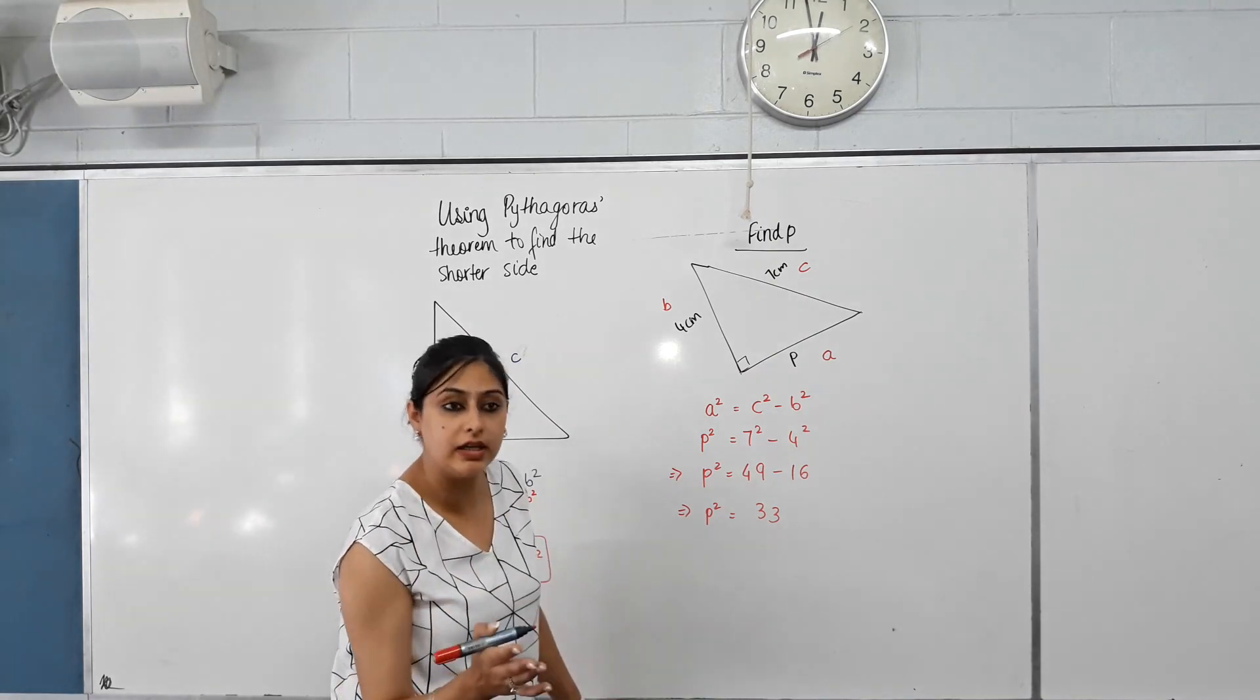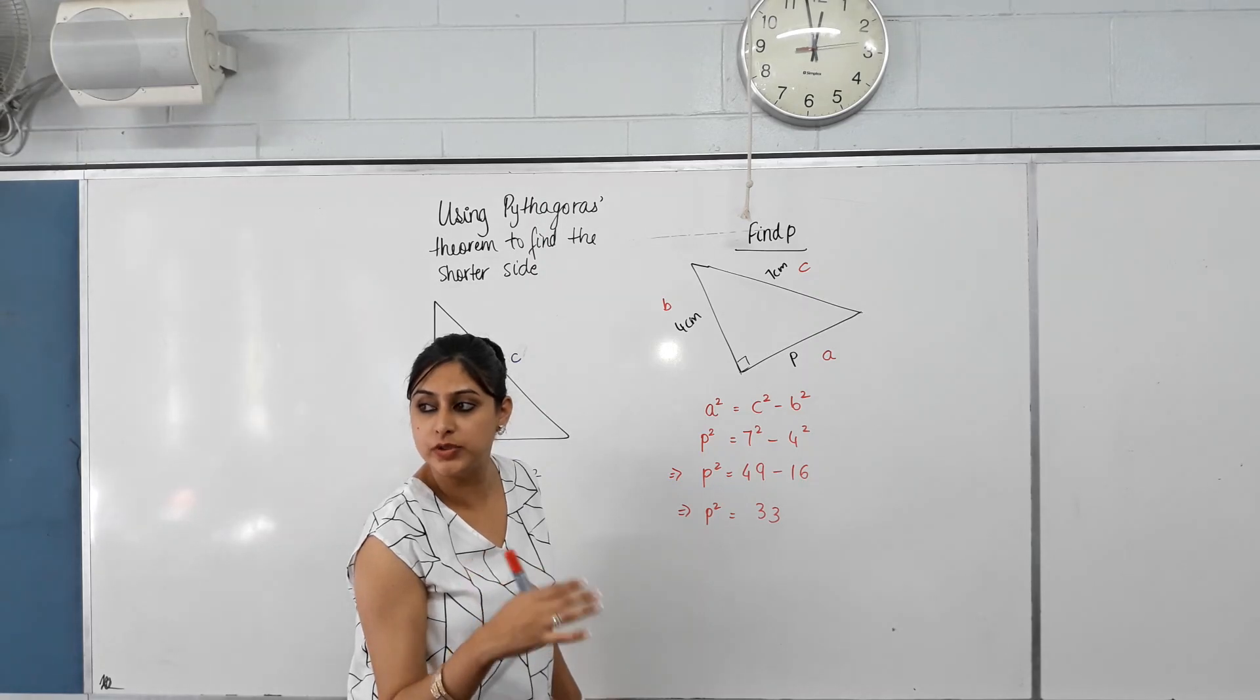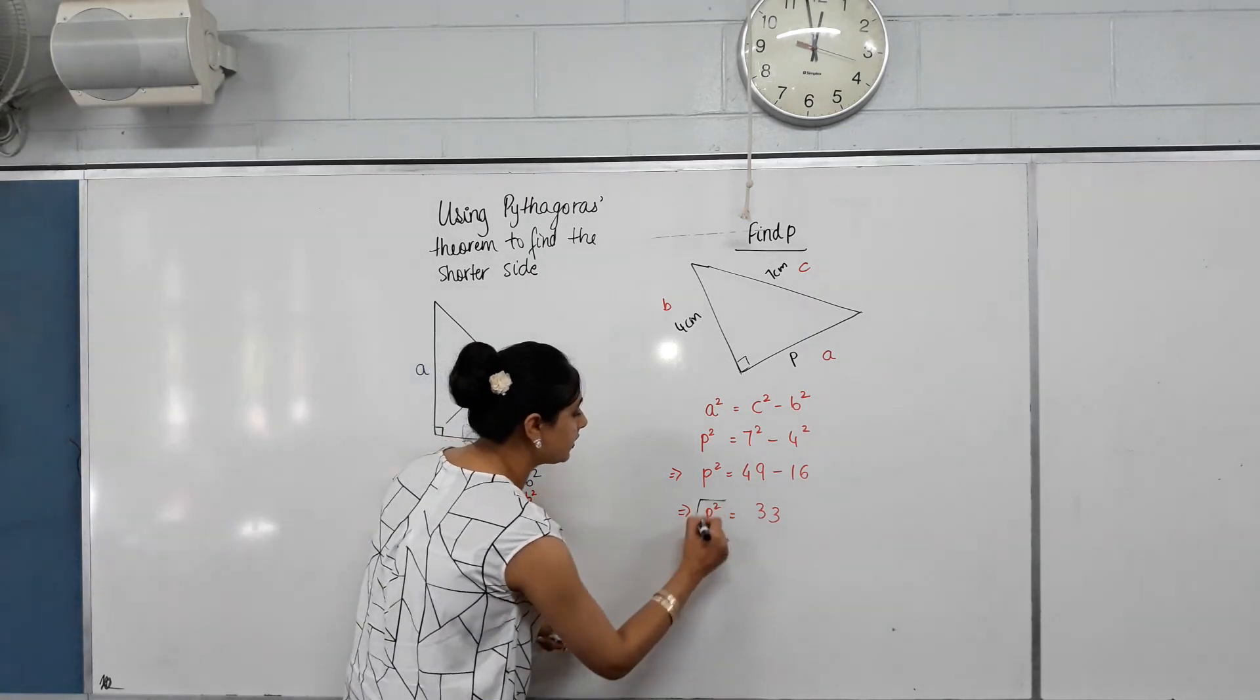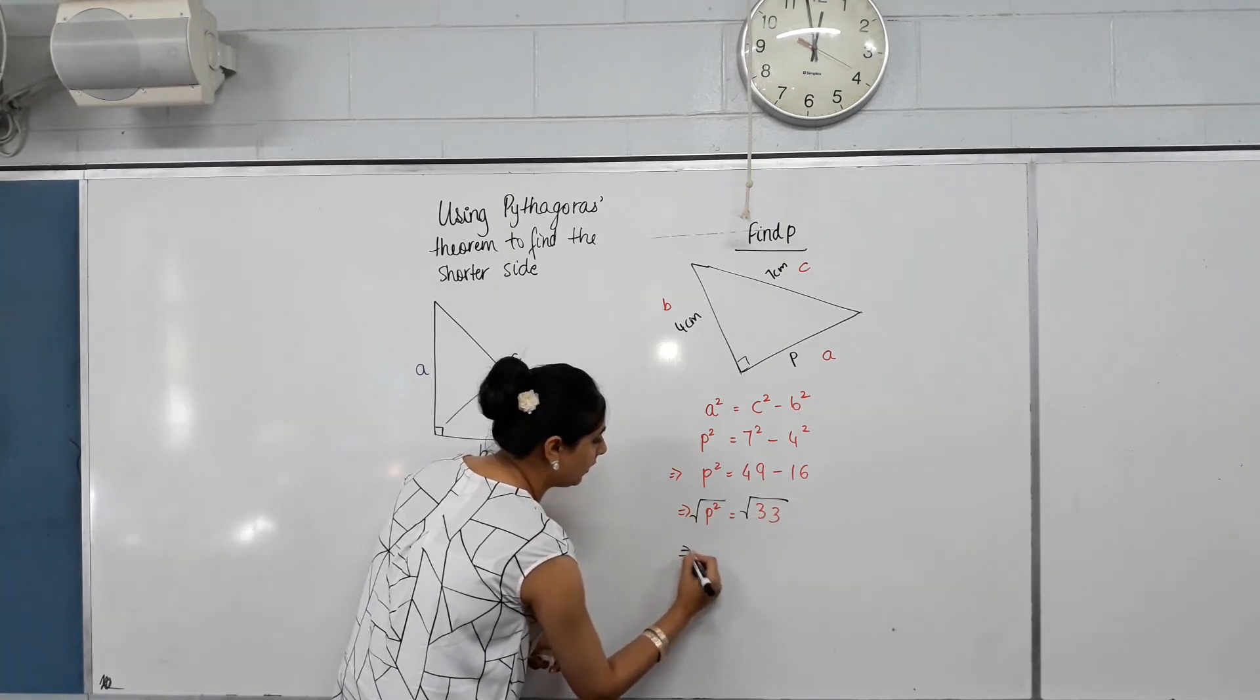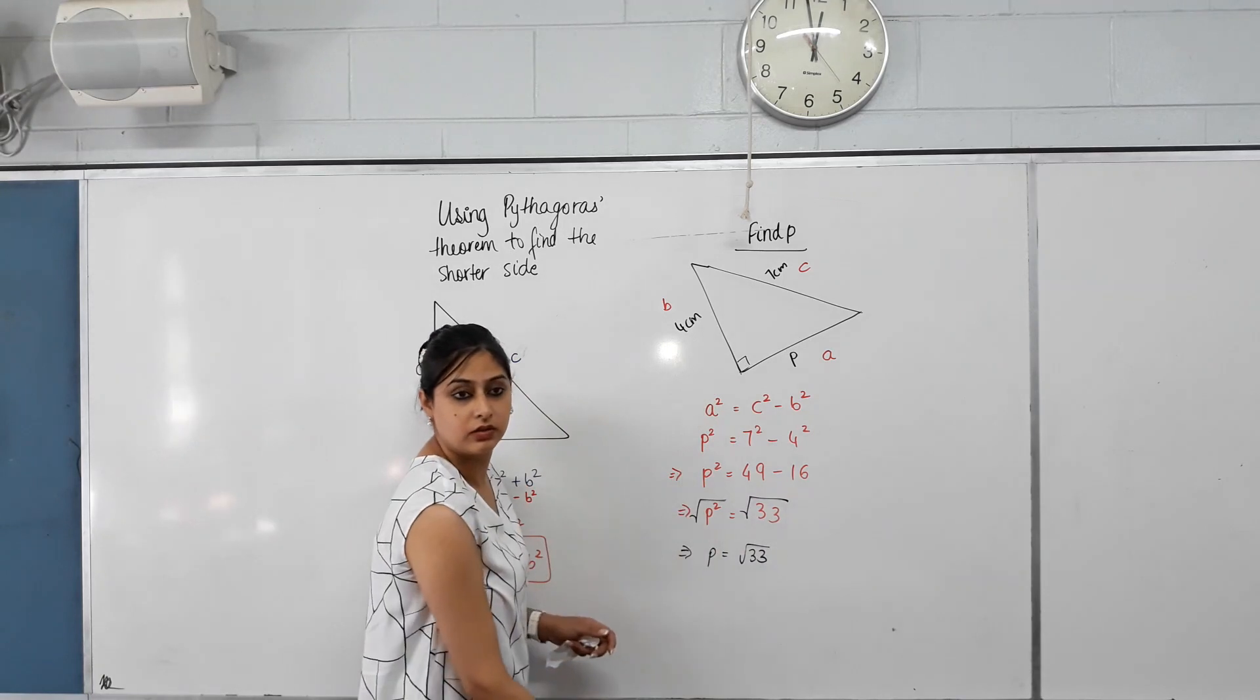Now, if P squared is 33, what would P be equal to? What's opposite of squaring? Square root. Can I square root both sides? Yes. So what would I get? P equals? What units? Centimeters.